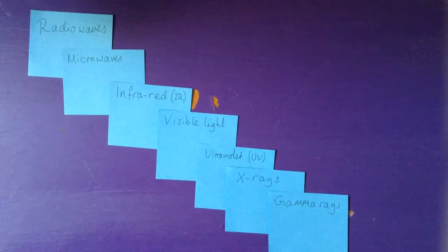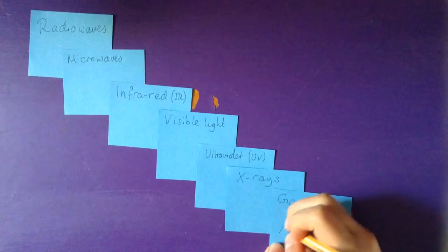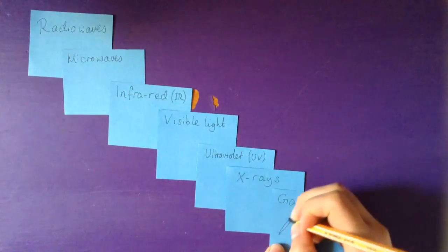Each of the types of waves in the electromagnetic spectrum has its uses and its dangers. If we start with the uses, gamma rays can be used to sterilize equipment.